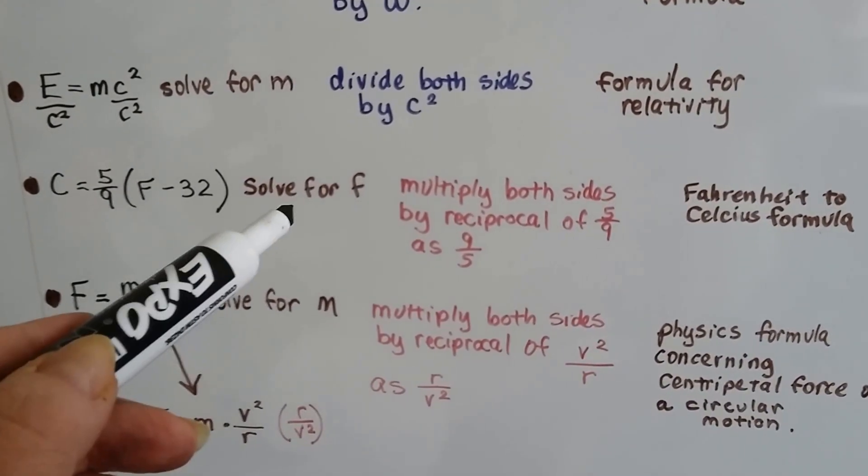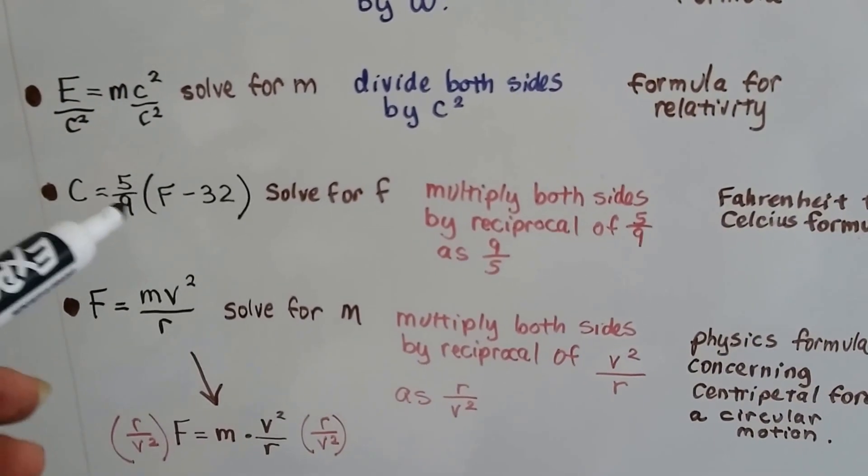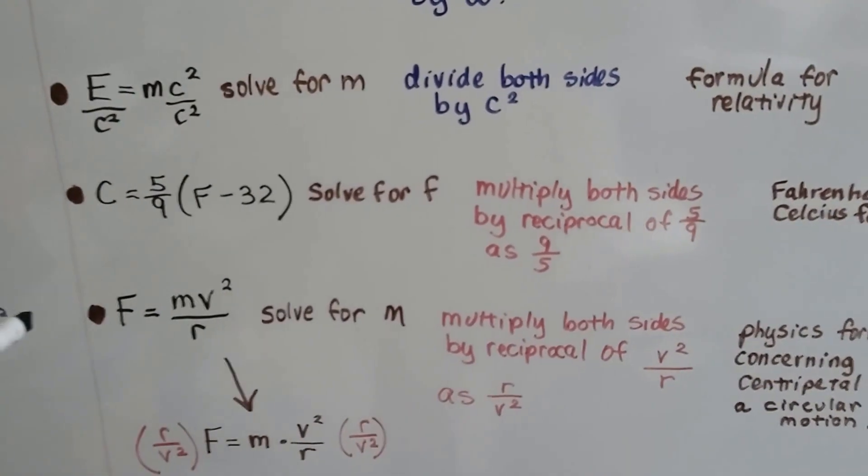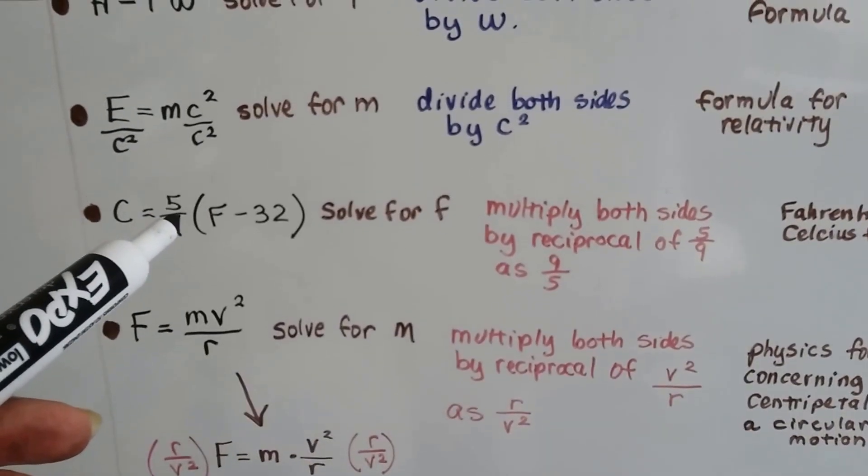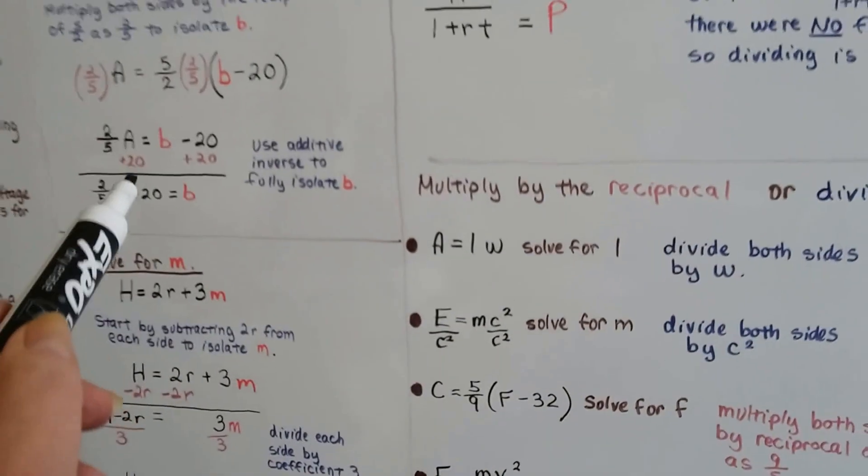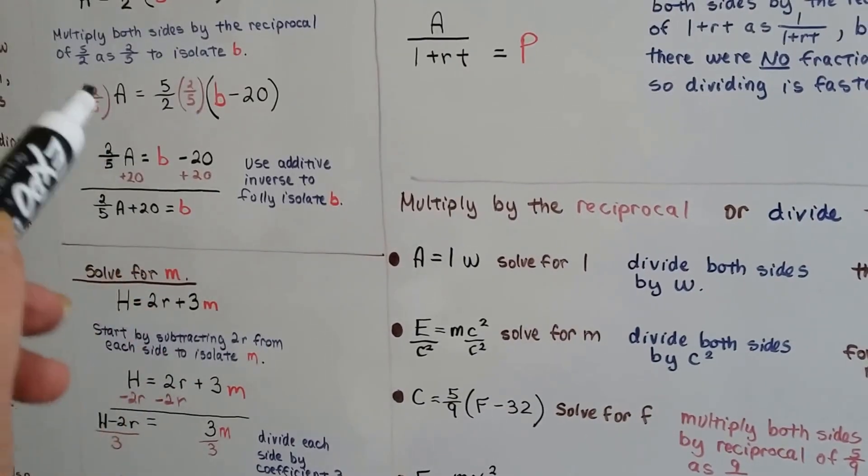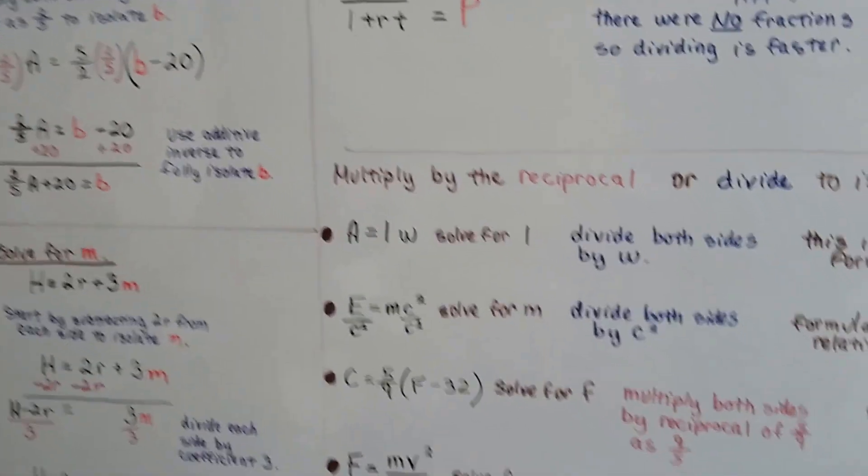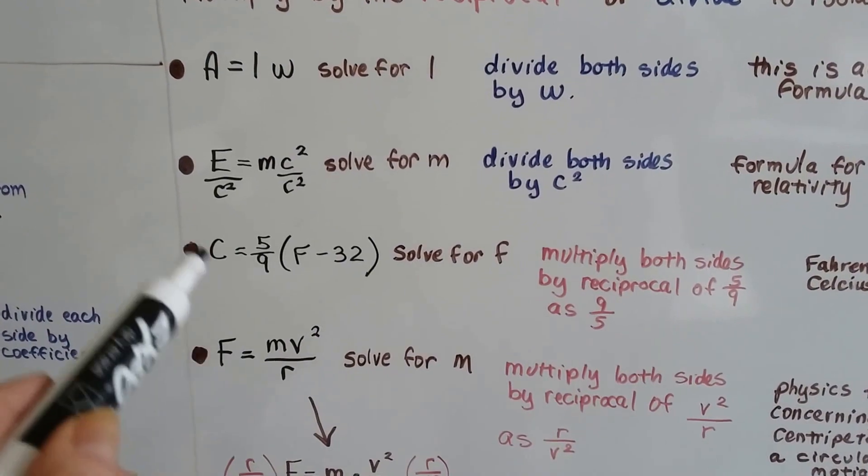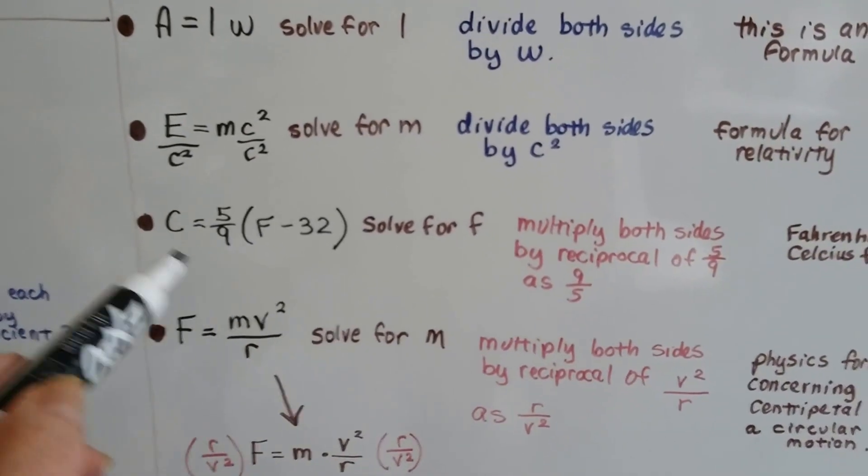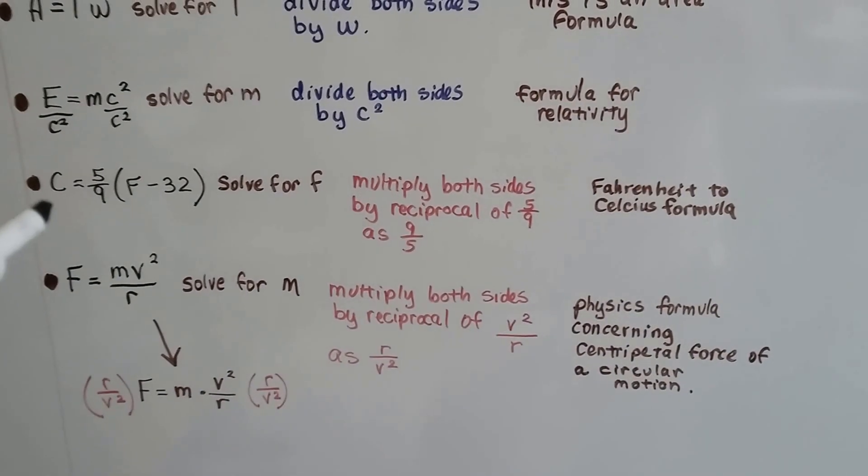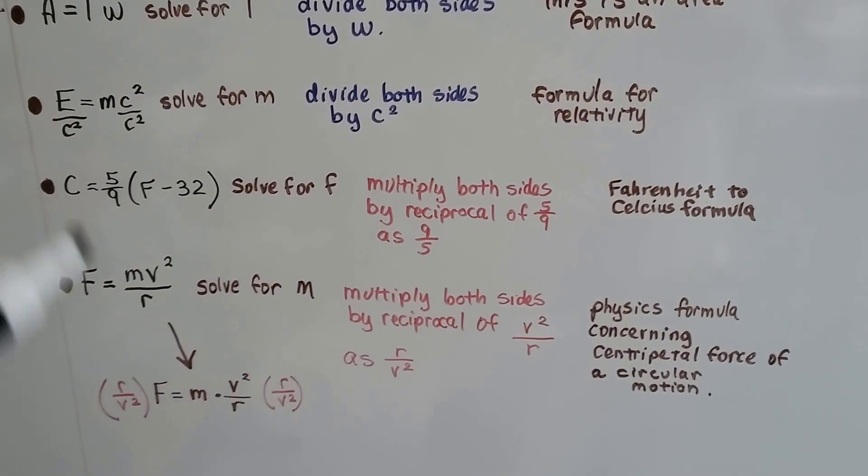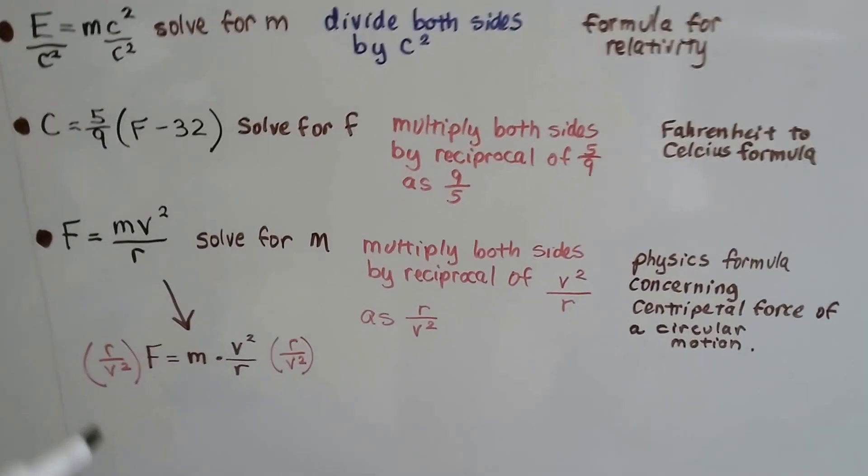Here we have C equals 5 ninths times F minus 32. And to solve for F, well, there's already a fraction here, so we can multiply both sides by the reciprocal of this 5 ninths as 9 fifths. That's just like what we did over here. We multiply both sides by the reciprocal of 5 halves. We can multiply both sides of the equation by 9 fifths, its reciprocal. This is a formula to change Fahrenheit into Celsius.